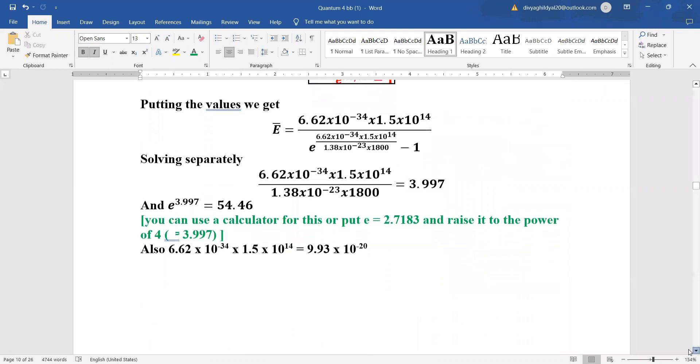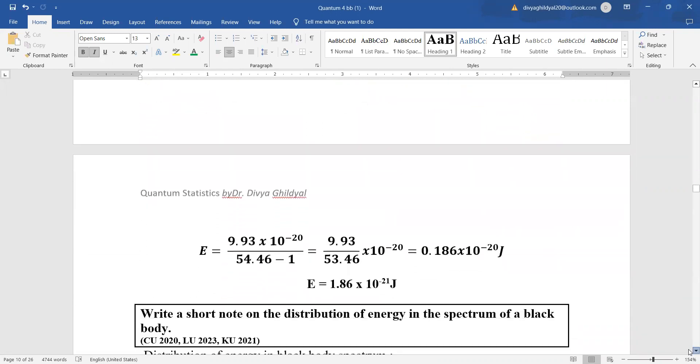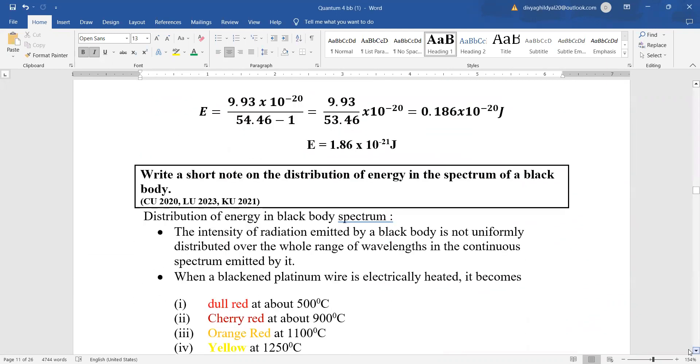Now we are continuing with the theoretical aspects of quantum statistics. So today a very important topic, the spectral distribution of energy in the spectrum of a black body is what we are going to discuss. Kindly subscribe to the channel before continuing further.